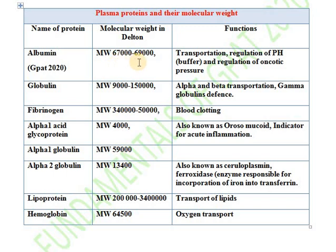This was a question in GPAT 2020: what is the molecular weight of albumin? It is around 67,000 to 69,000 daltons. Albumin is mainly involved in transportation — it is a transport protein. It is also involved in the regulation of pH, acting as a buffer, and in the regulation of osmotic pressure.